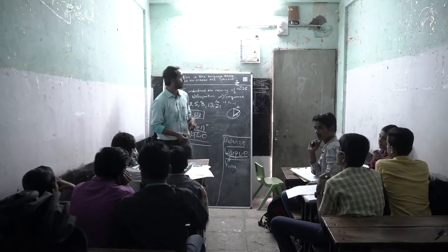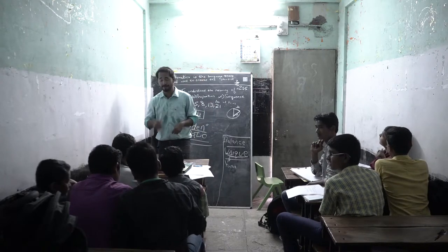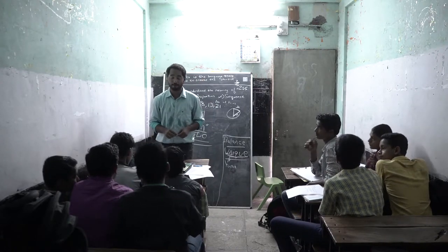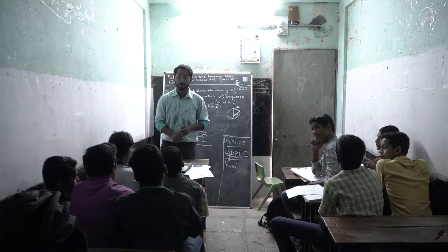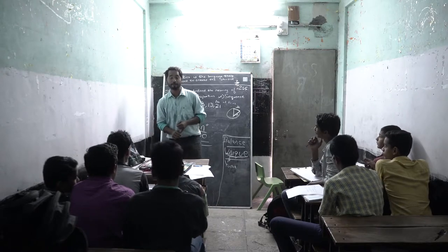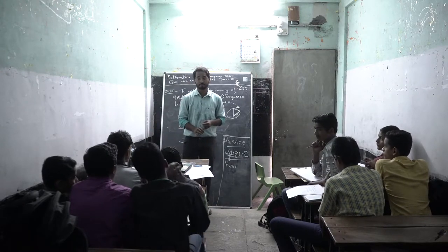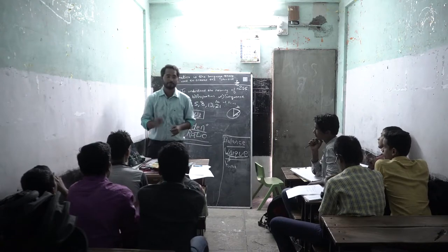Shubham and Piram's group measured a switchboard. What was the length? 24 cm. What was the breadth? 14.8 cm. When you divide, what do you get? 1.62.